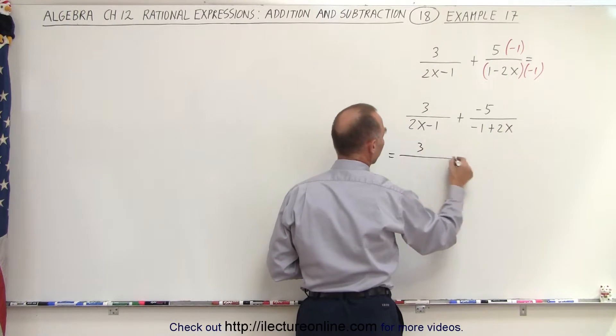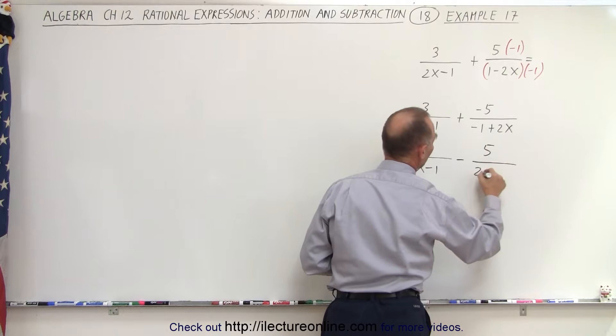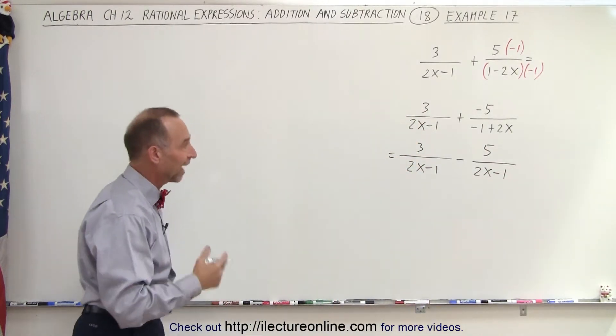So this can be written as 3 over 2x minus 1 minus 5 divided by 2x minus 1. And notice now the denominators are exactly the same.